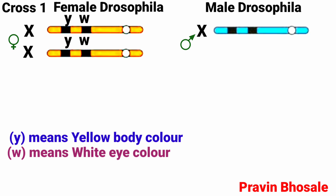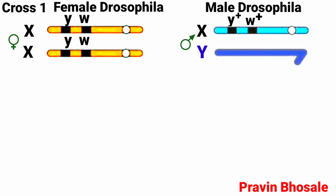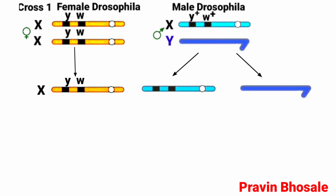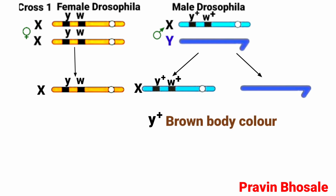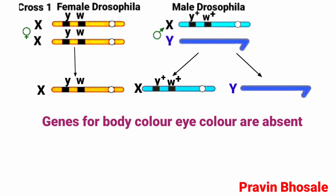The male has one X chromosome and one Y chromosome. The X chromosome carries dominant genes y+ and w+, meaning brown body color and red eye color respectively. On the Y chromosome, genes for body color and eye color are absent. In the female, only one type of egg is formed: an X chromosome carrying small y and small w. In the male, two types of sperm are formed: one with an X chromosome carrying y+ and w+, and one with a Y chromosome carrying no genes for body color or eye color.